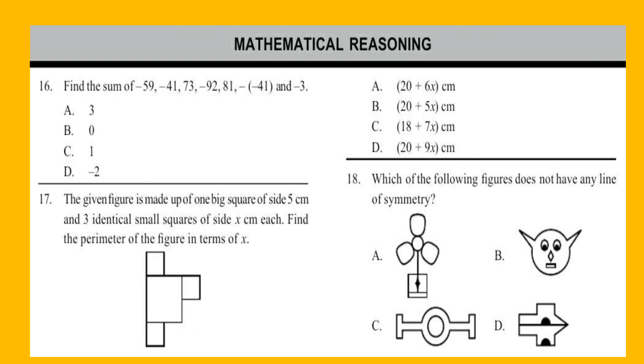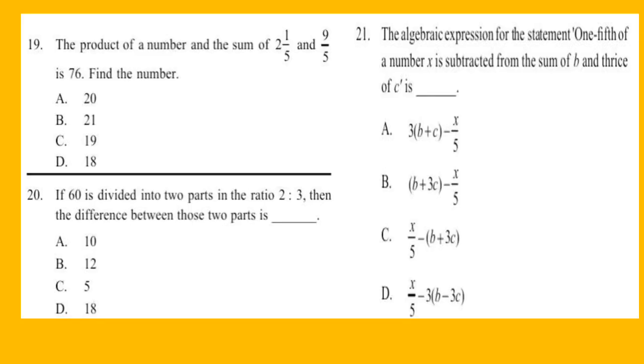You can pause the video if required. Question 19: The product of a number and the sum of 2 1/5 and 9/5 is 76. Find the number.